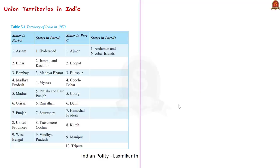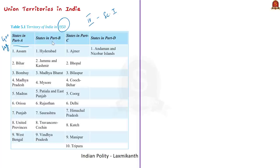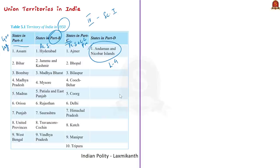At the time of independence there was an abundance of princely states and former British India provinces. The Indian Constitution that came into force in 1950 recognized four categories of territories in Schedule 1. Part A comprised former British India provinces with a governor and legislature; Part B comprised former princely states governed by Raj Pramukh; Part C was a combination of princely states and chief commissioners' provinces governed by a chief commissioner. Part D comprised the lone territory of Andaman and Nicobar Islands with a lieutenant governor appointed by the central government. This part formed the basis for the creation of union territories.